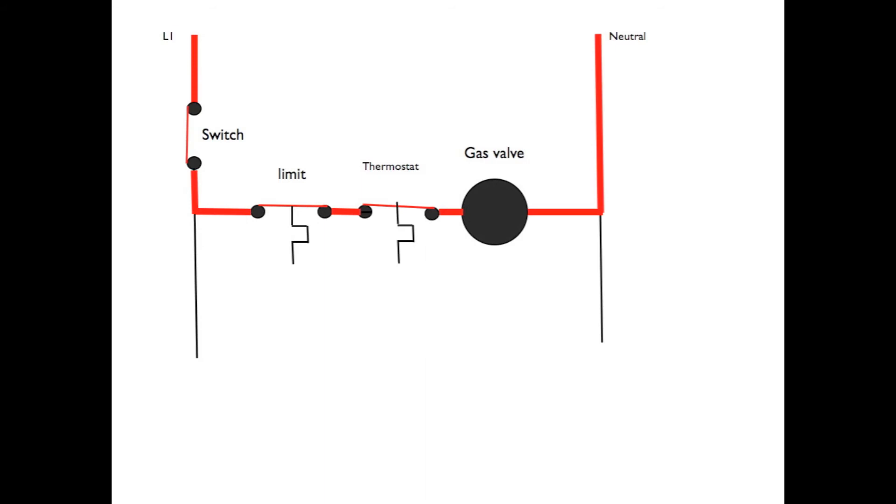So if I was sequencing this, I would say power goes through the system switch through the normally closed limit switch through the thermostat to energize the gas valve.